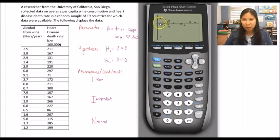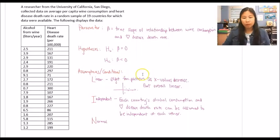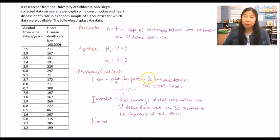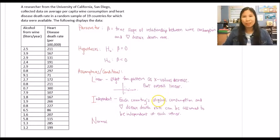Looking at the residual plot: residuals out at larger x values are smaller, but residuals toward smaller x values are more spread out — a slight fan pattern. It's not the greatest, but there's not too much of a clear pattern overall. We acknowledge the slight fan pattern as x values decrease, but overall still consider it approximately linear.